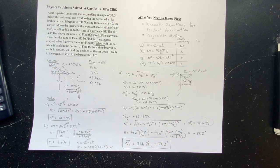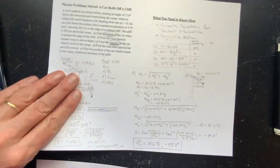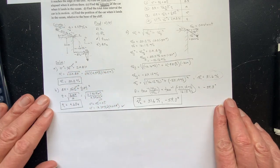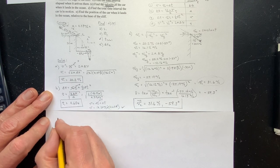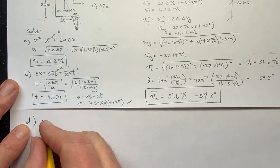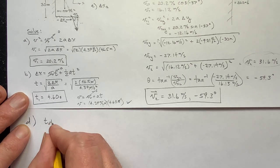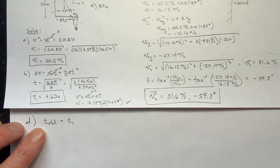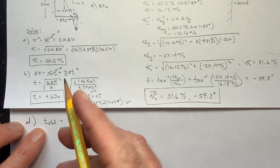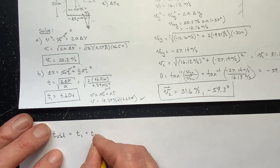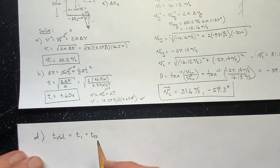Now for part D, finding the total time. The total time is t₁ (down the ramp) plus t_freefall (time falling from the cliff to the ocean). We already know t₁ = 4.60 s. We need to find t_freefall.